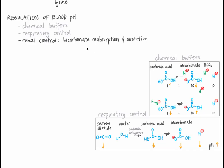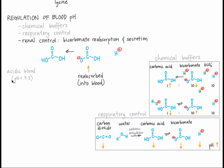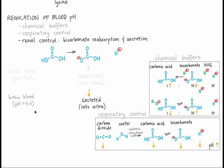The renal system controls bicarbonate reabsorption and secretion in the kidneys. If the blood is very acidic, the kidneys reabsorb more bicarbonate, moving it back into the blood where it can act as a buffer for those H+ ions. Bicarbonate can recombine with H+, forming carbonic acid, which decreases H+ concentration and thus increases pH. If the blood isn't acidic enough, the opposite happens — bicarbonate is secreted and subsequently excreted in the urine. This secretion of bicarbonate disrupts the ratio of carbonic acid to bicarbonate. To compensate, more carbonic acid dissociates into bicarbonate and H+, increasing H+ concentration, which increases hydronium ion concentration, and thus decreases pH, compensating for that initial basicity.